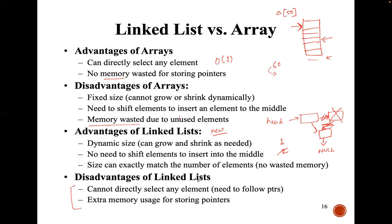That's the biggest advantage of linked list over array. The disadvantage of linked list is that we cannot directly select any element. Given an index or a position, you cannot directly access an element from the linked list. From an array you can access the fourth element using index 3. But from a linked list, if you want to know the value of the third or fourth item, you can't find it directly. All you have is the address of the first node. You have to start from the first node and traverse until you find the element you're looking for. Also, we need some extra memory for the pointer — for each node we are storing the value and the pointer.